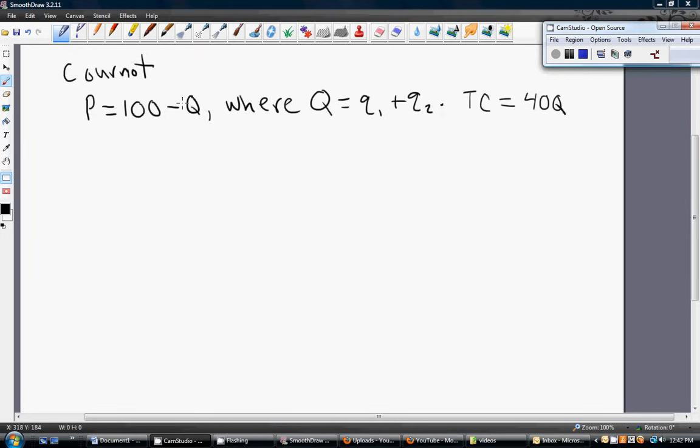So the market demand conditions are given by this inverse demand of price equals 100 minus Q, where Q equals the output of firm 1 plus the output of firm 2.